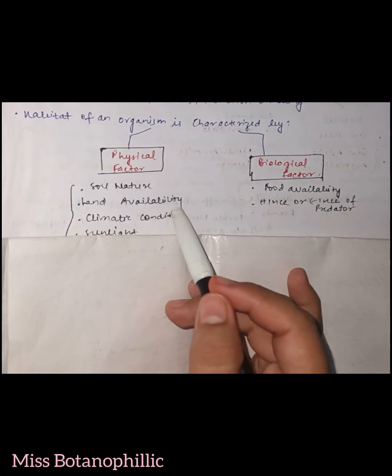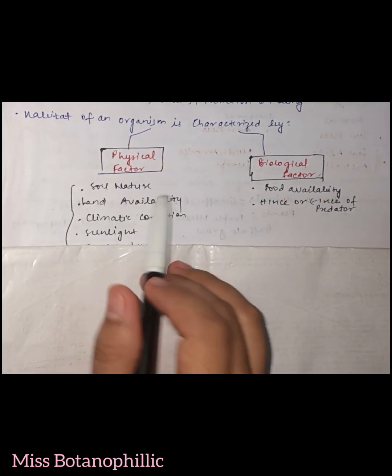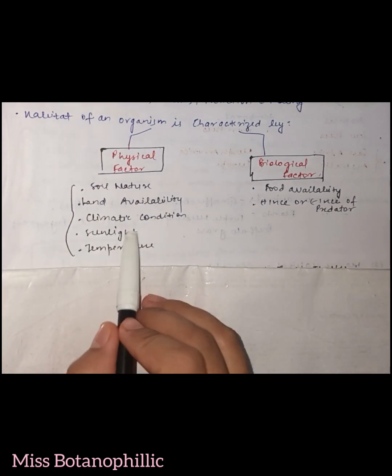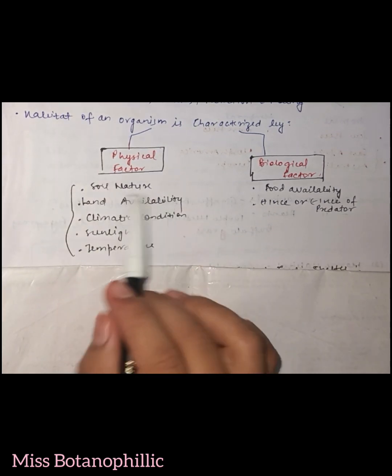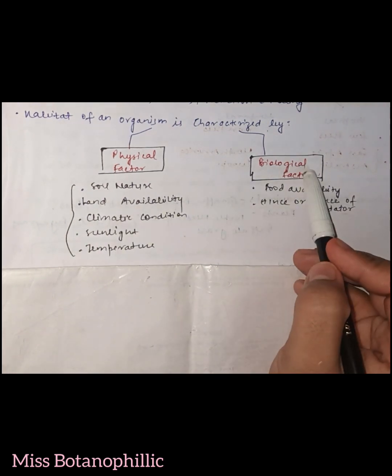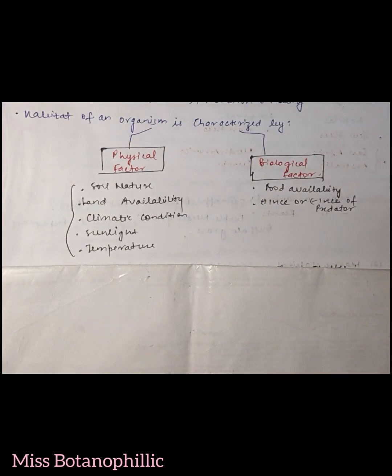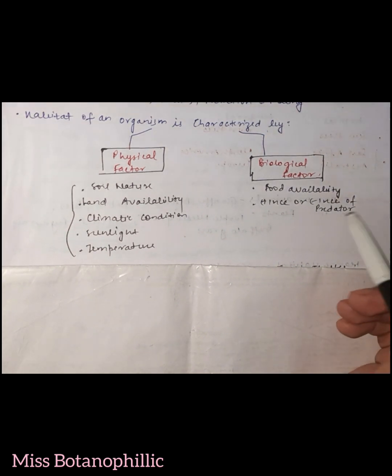Physical factors include: first of all soil nature, land availability, climatic condition, sunlight and temperature. So these things affect the habitat. And if we talk about biological factors, there is food availability and second, presence and absence of a particular predator.